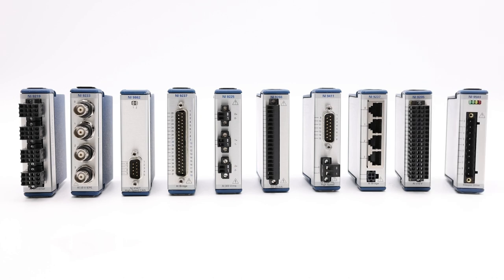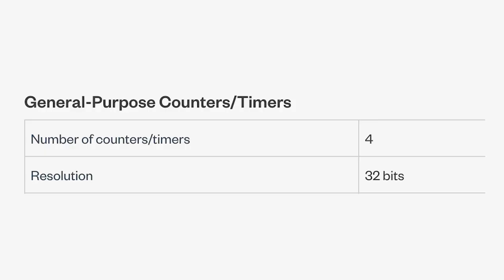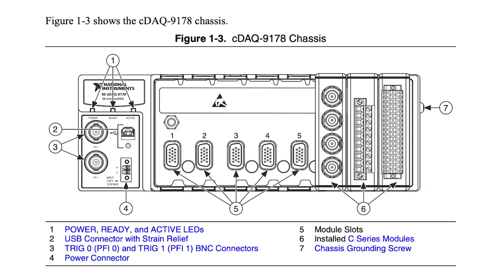The CDAQ-9178 additionally has four 32-bit general-purpose counter/timers, which can be accessed by the user. The user can also share clocks and triggers through two built-in BNC connectors.